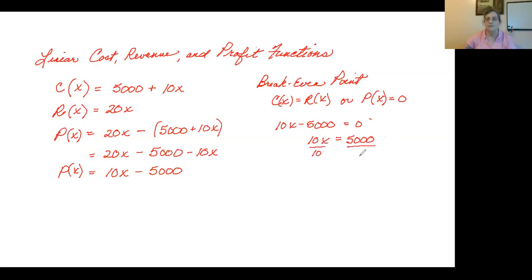Which means if I divide by 10, I'm going to get x equals 500. So I would have to make and sell 500 birdhouses just to take care of the $5,000 fixed cost here. That's a lot of birdhouses.